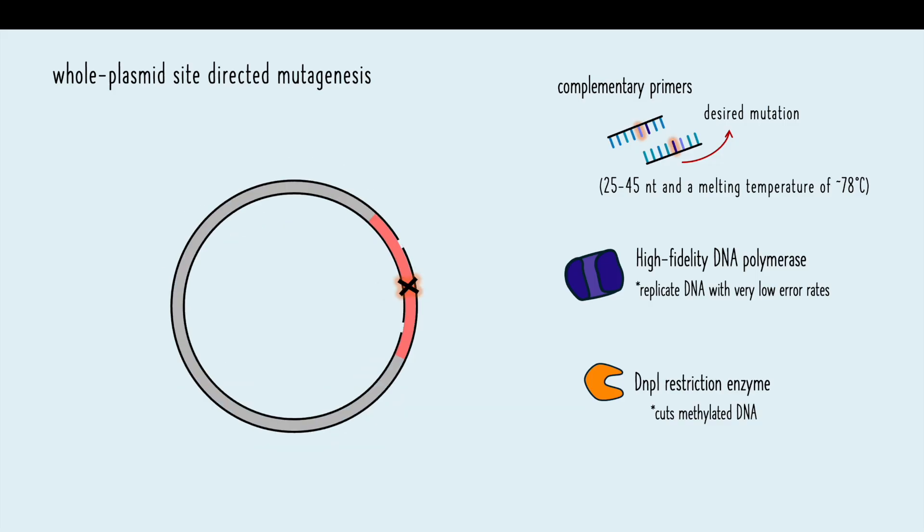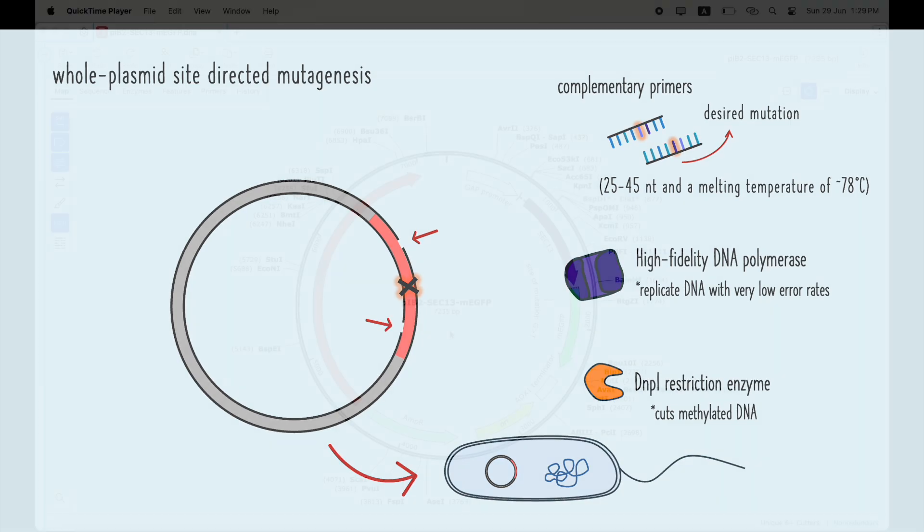Once complete, the PCR product is ready to transform competent cells. You'll notice that there are nicks from the reaction. However, when you transform this product into competent E. coli, the bacteria's own repair enzymes will naturally seal the nick and circularize the plasmid.